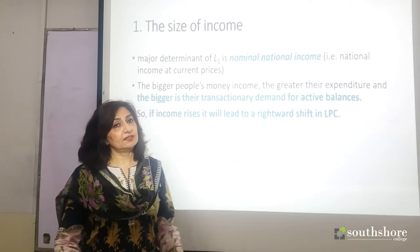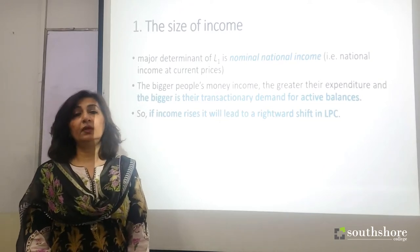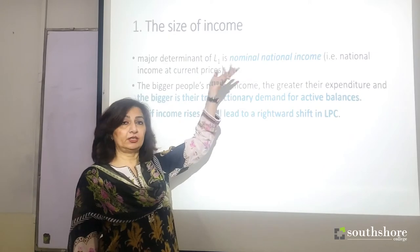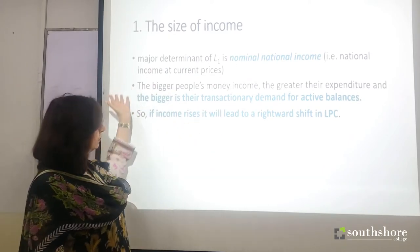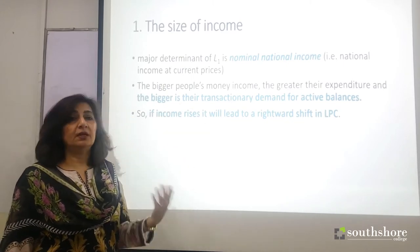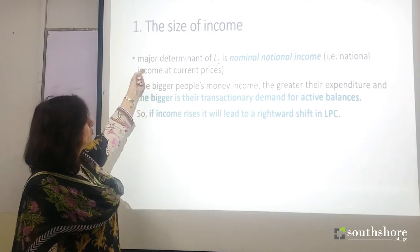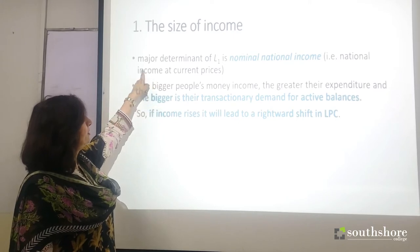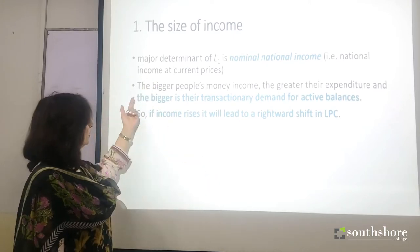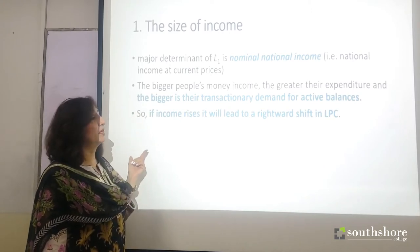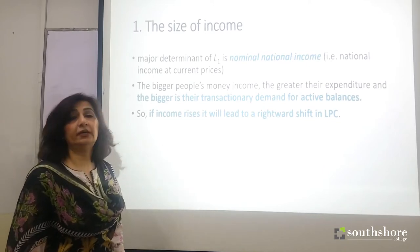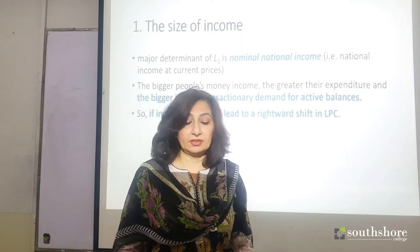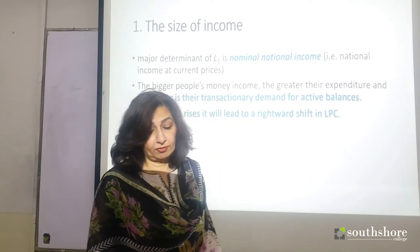Size of income: if you have a larger income, you are likely to do more transactions and buy more goods and services. So when there is a rise in nominal national income, there is going to be a rise in the transactionary demand for money — what we call L1, or active balances. The bigger people's money income, the greater their expenditure, and the bigger the transactionary demand for active balances. So if income rises, the LPC will shift to the right. Conversely, if income goes down, people will require less money, do fewer transactions, and demand less money — the LPC shifts to the left.